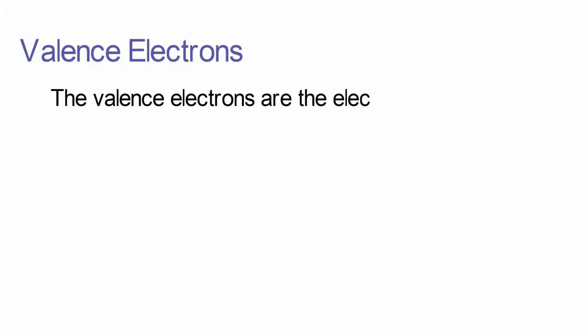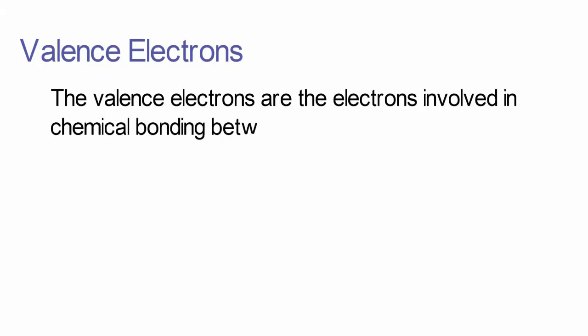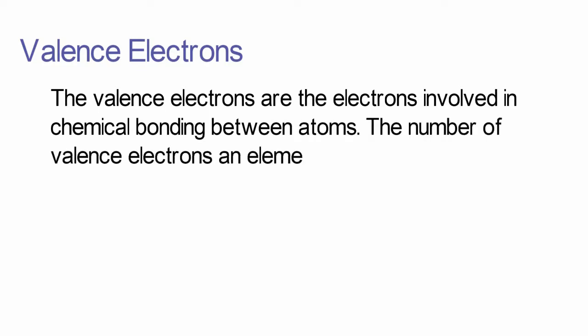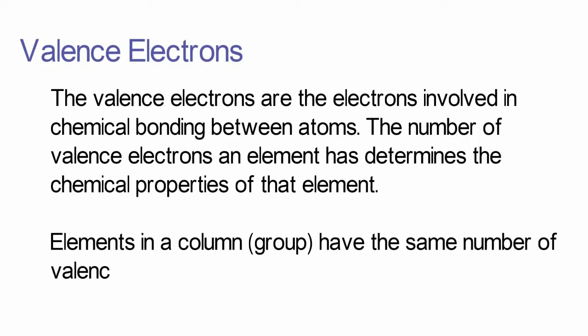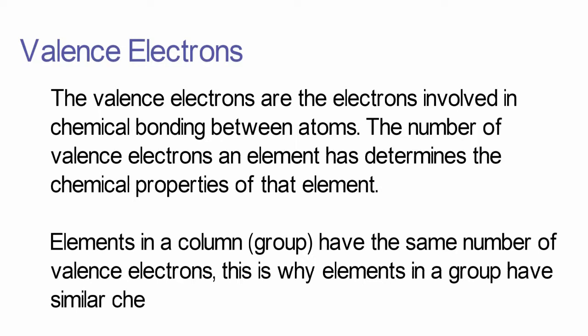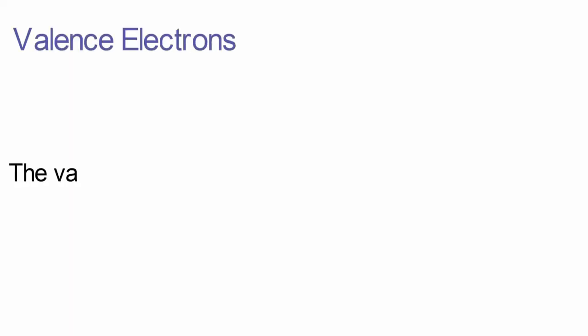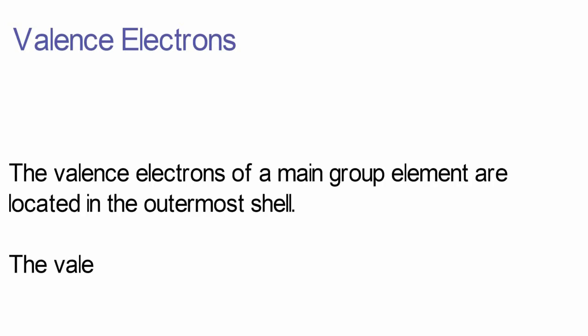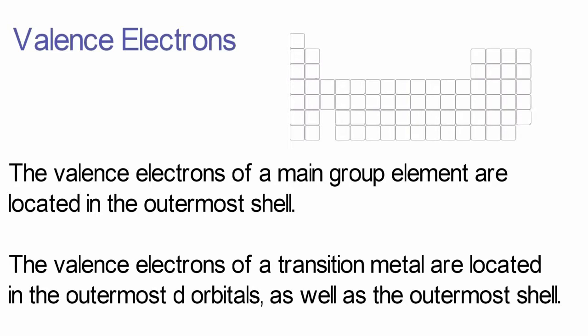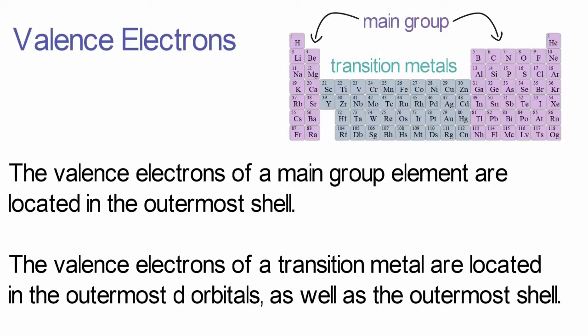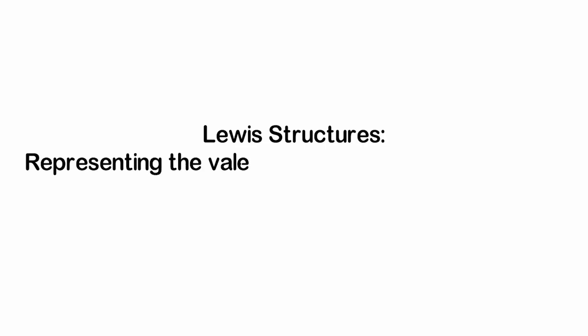Before we continue, we need to expand our definition of valence electrons. We know that valence electrons are the electrons in the outermost shell of an atom, but most importantly, they are the electrons primarily involved in chemical bonding between atoms. The number of valence electrons an element has determines its chemical properties. Elements in a group have the same number of valence electrons, which is why elements in a group have similar chemistry. The valence electrons of a main group element are in the outermost shell, while those of a transition metal are in the outermost d orbitals as well as the outermost shell. The outermost shell is the highest value of n, the principal quantum number.